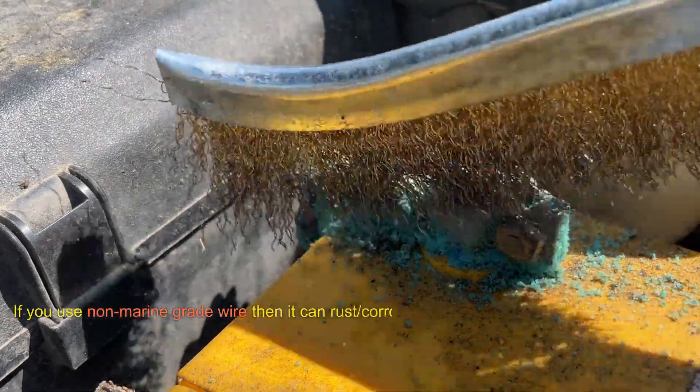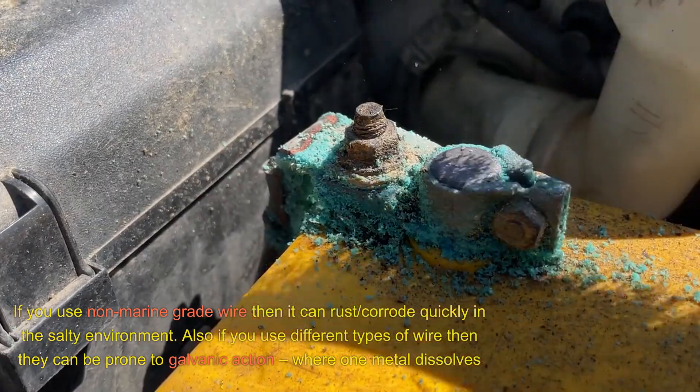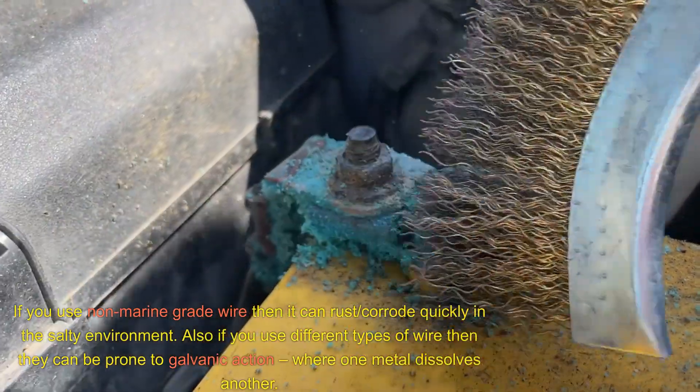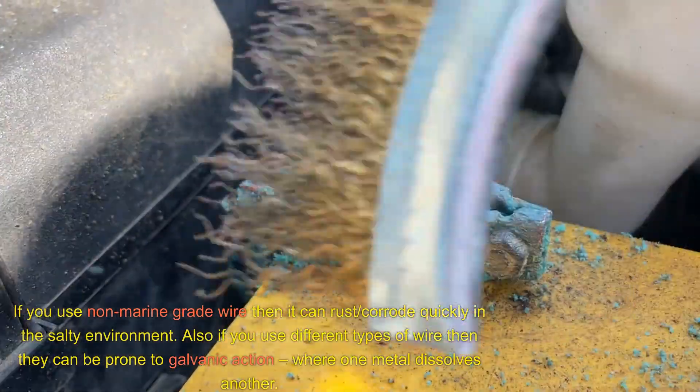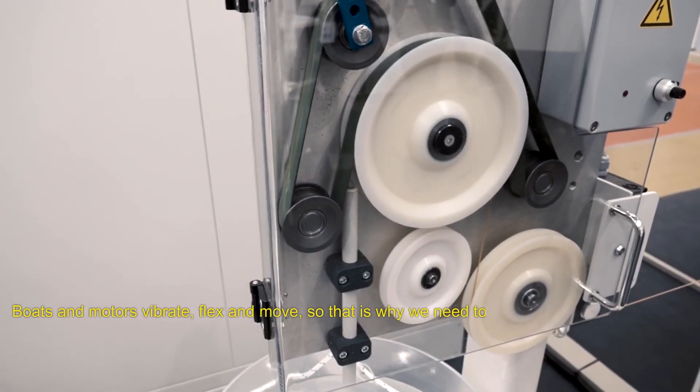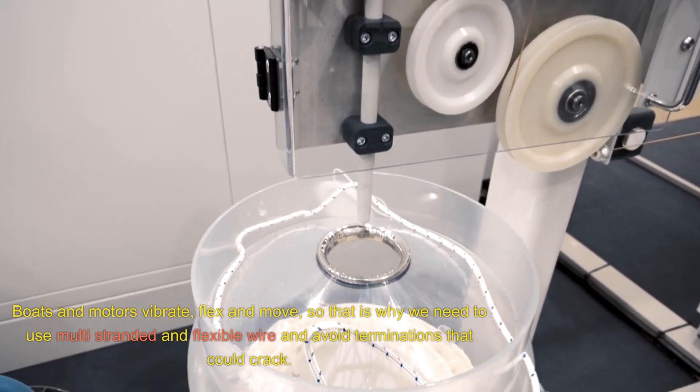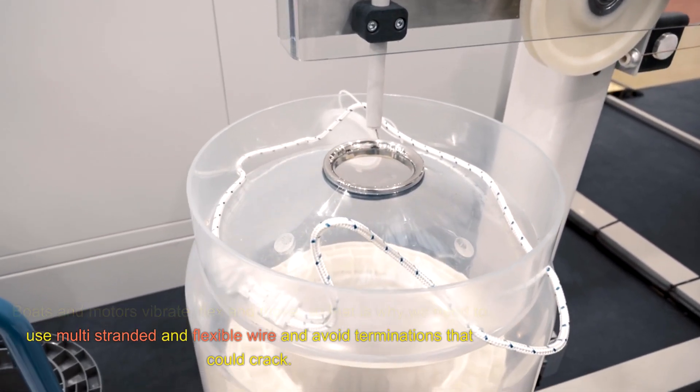If you use non-marine grade wire, then it can rust and corrode quickly in the salty environment. Also, if you use different types of wire, then they can be prone to galvanic action, where one metal dissolves another. Boats and motors vibrate, flex and move, so that's why we need to use multi-stranded and flexible wire and avoid terminations that could crack.